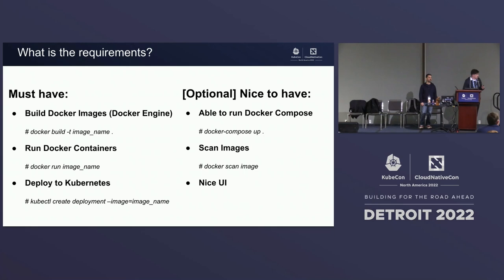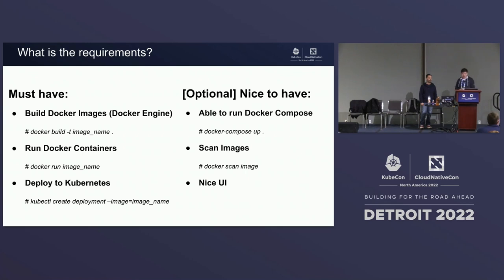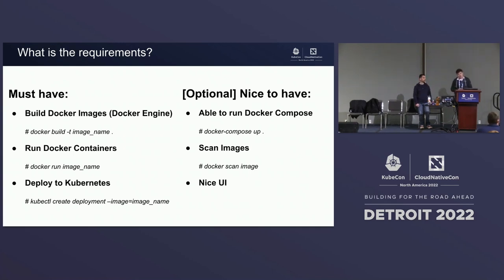Other things that are less important include the capability to run Docker Compose. Docker Compose is a nice solution with a YAML that you can put multiple applications into and do Docker Compose up. Unfortunately, Kubernetes is much more complex — instead of one YAML, you're going to have 50 YAMLs. There's less and less interest in using Docker Compose now. Things like scanning images might be important for some organizations — there's Trivy, for example. For UI, it's optional.